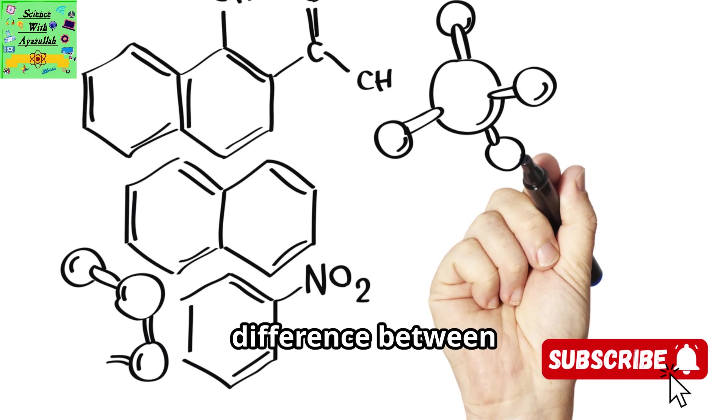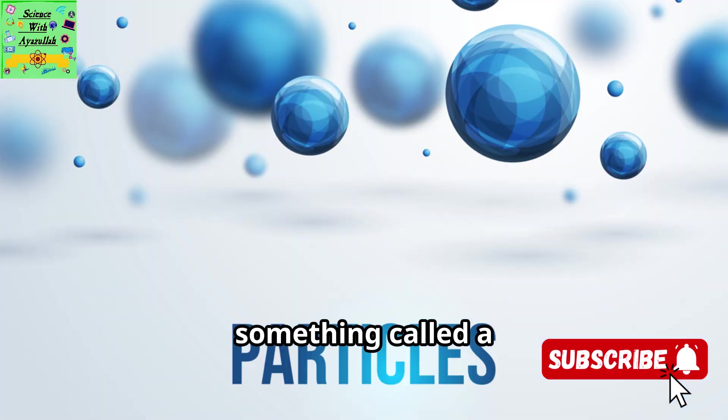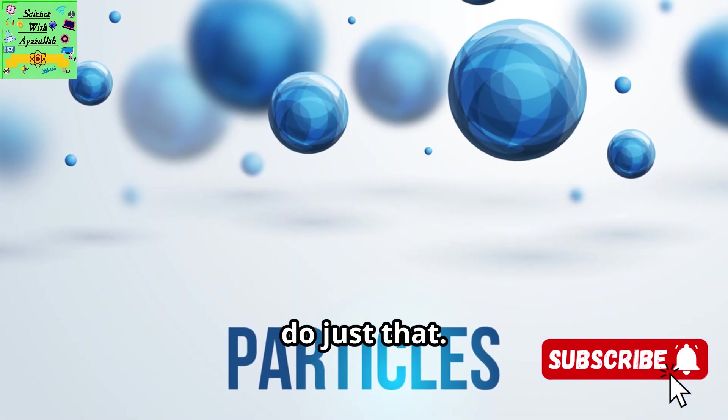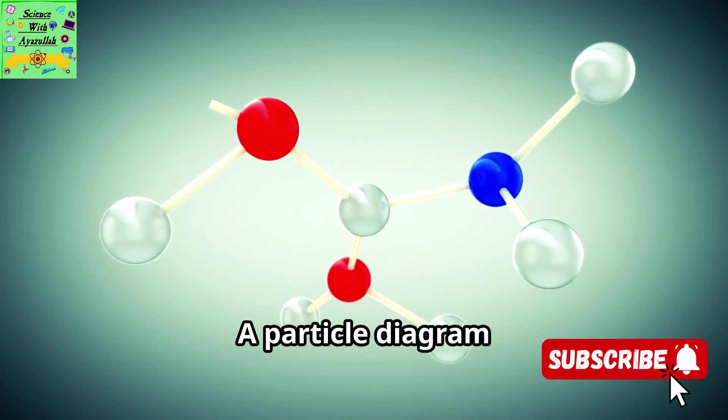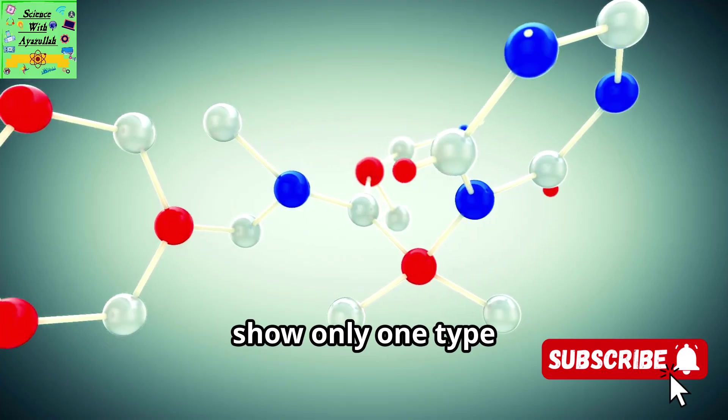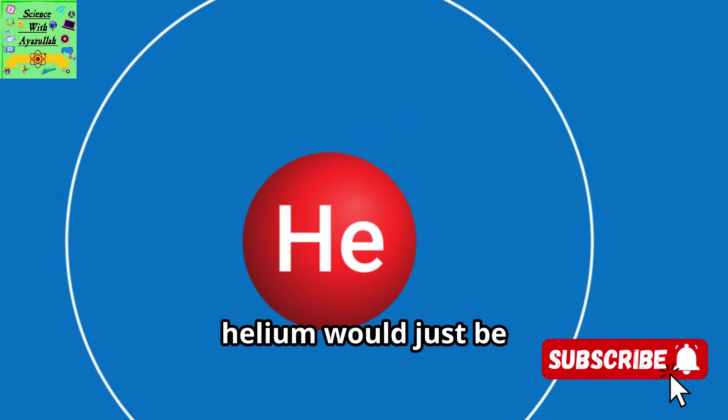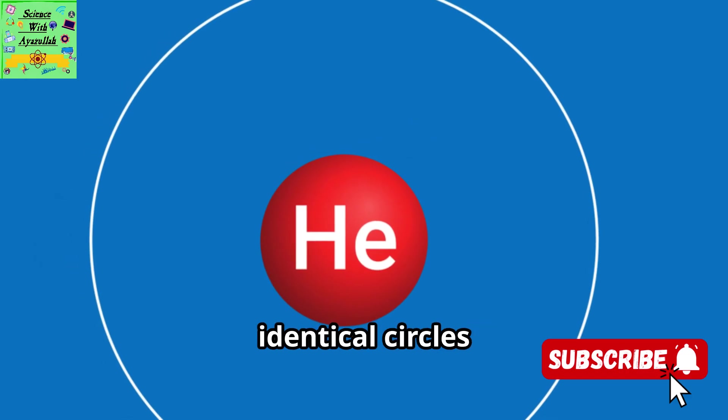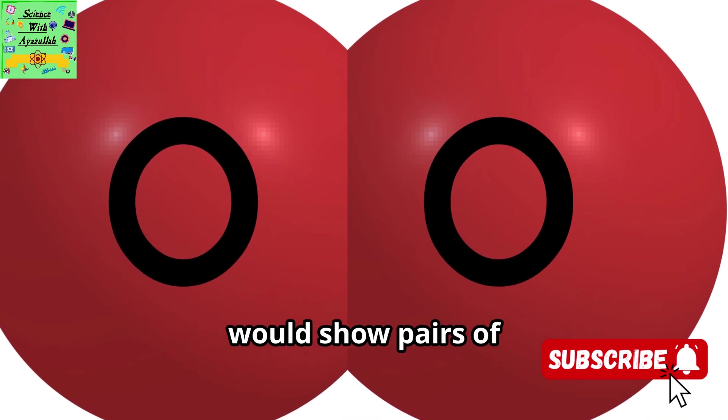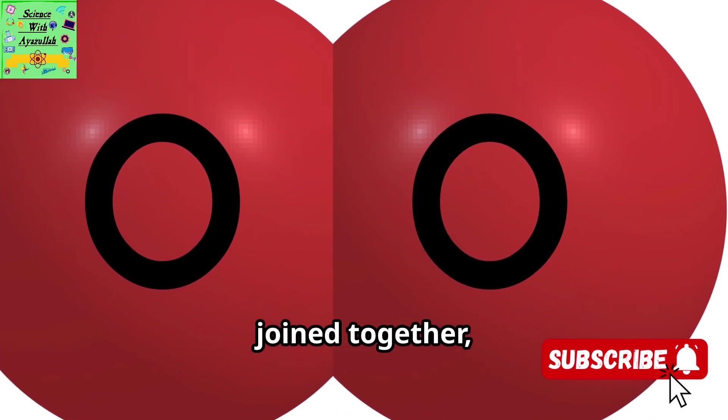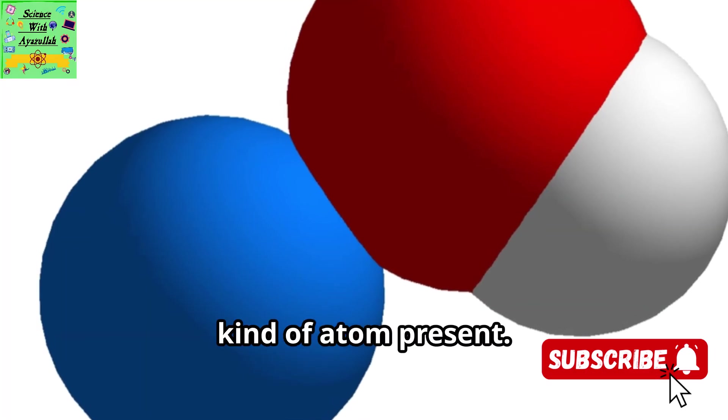Sometimes the best way to understand the difference between elements and compounds is to draw them. Scientists use something called a particle diagram to do just that. Imagine you could zoom in and see the individual atoms or molecules. A particle diagram for an element would show only one type of atom represented by identical circles. For example, a box full of pure helium would just be a bunch of separate identical circles floating around. A box full of pure oxygen gas, O2, would show pairs of identical circles joined together, because oxygen atoms like to travel in twos. But in both cases, there's only one kind of atom present.